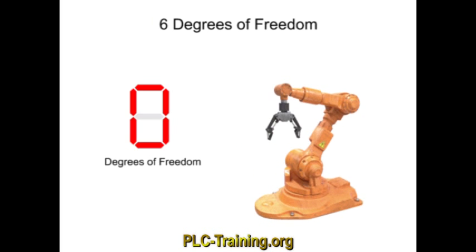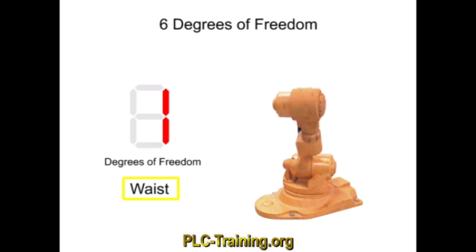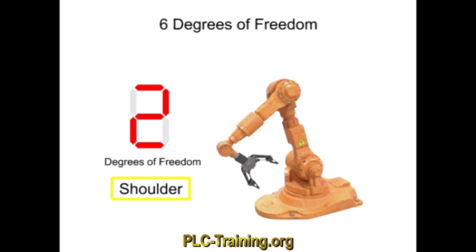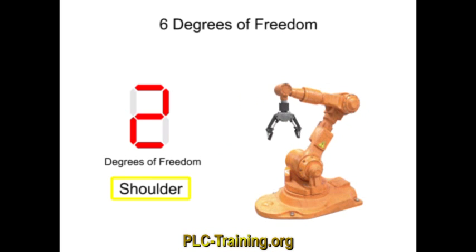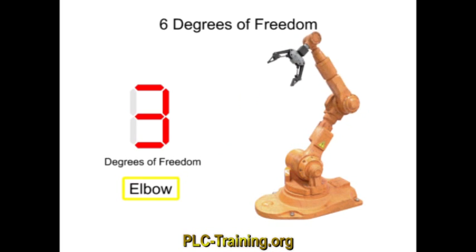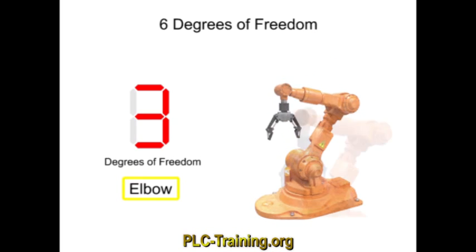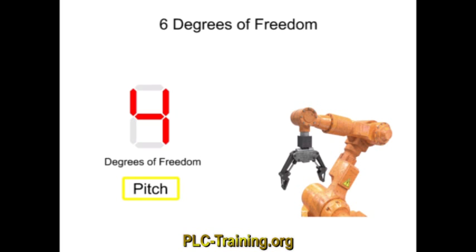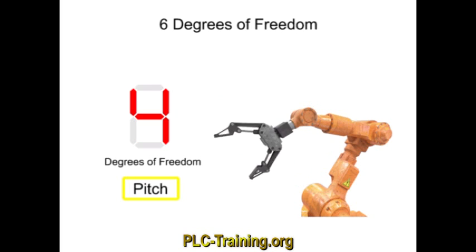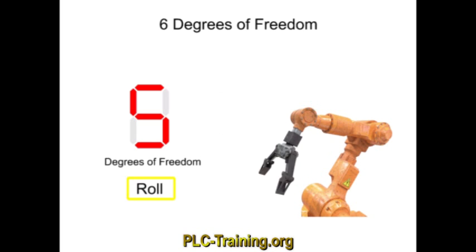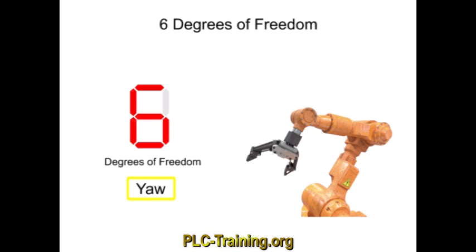This particular robot is equal to six degrees of freedom. It moves along one axis for each of the waist, shoulder, and elbow joints, and along three axes at the wrist, using pitch, roll, and yaw.